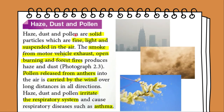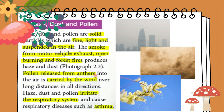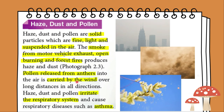Haze, dust and pollens are fine solid particles that are suspended in the air. Smoke from motor vehicle exhaust, open burning and forest fires produce haze and dust. Meanwhile, pollen released from the anthers of flowers is carried away by the wind over long distances. Haze, dust and pollen may irritate the respiratory system and cause cough, nasal congestion, watery nose, sneezing and shortness of breath. They may also cause respiratory diseases such as asthma and bronchitis.